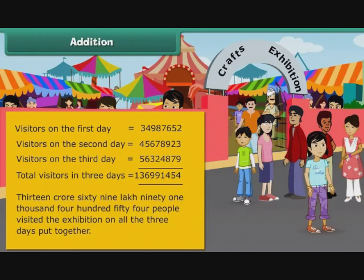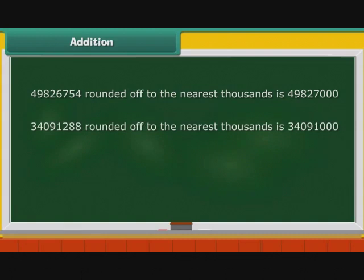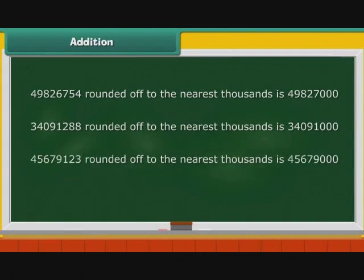13,69,91,454 people visited the exhibition on all three days put together. At times, we do not want the exact sum of numbers — we want an approximate value. In such cases, we estimate the sum by rounding off the numbers. Let us estimate the sum of 49826754, 34091, 288, and 45679123 to the nearest thousands.